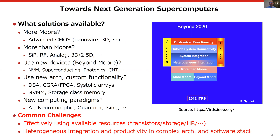We may also utilize new computing paradigms such as AI and quantum computing. Even with those technologies, we have several challenges. For example, those technologies will bring highly heterogeneous systems. Productivity of hardware and software design is very important. Also, how to effectively utilize available resources should be carefully considered.